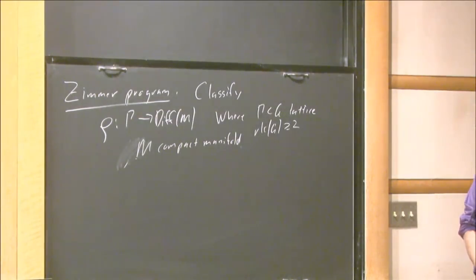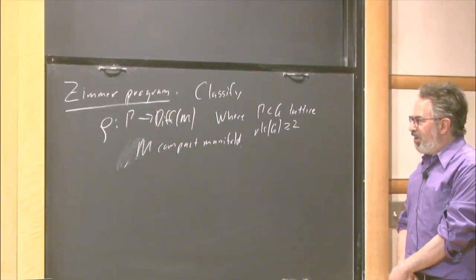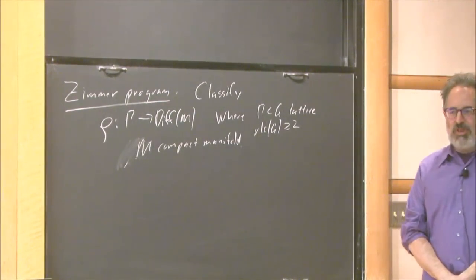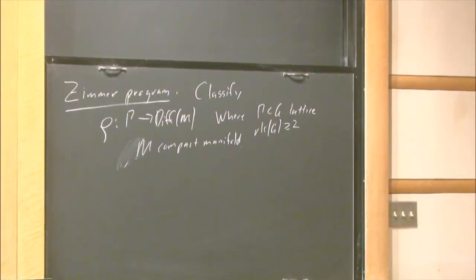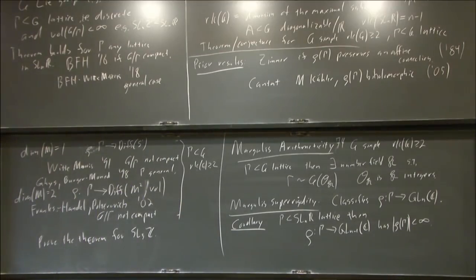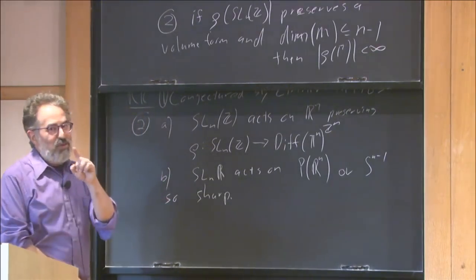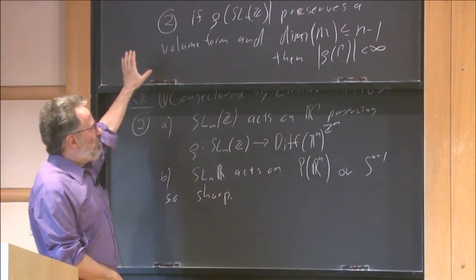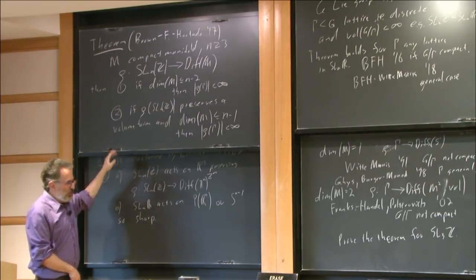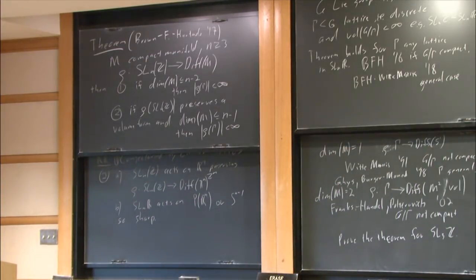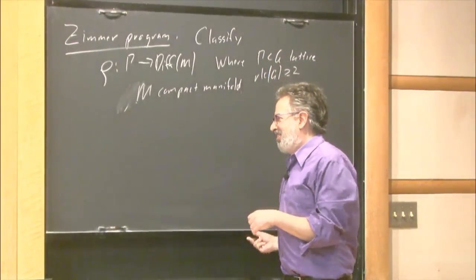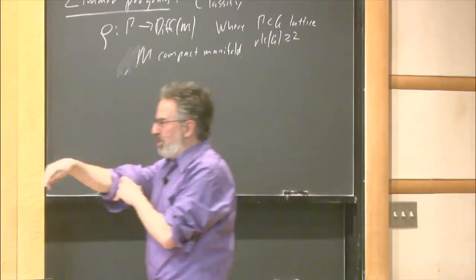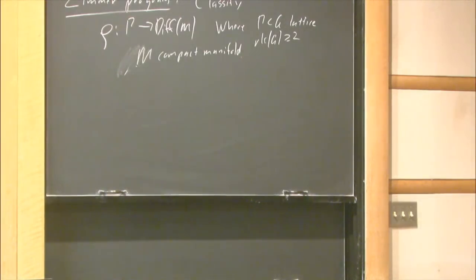There really is a conjectural picture, but it's sufficiently complicated that it doesn't fit in a talk. I should say—my apologies to the many people who have heard this joke before—if you look at Zimmer's 1983 paper where he lays this out, he reveals the fact that he was going to become a university president later in life by making statements that are impossible to prove either true or false. He makes the conjecture very clearly and explicitly, including all the other cases I've mentioned, but also does a very effective job of hedging his bets.